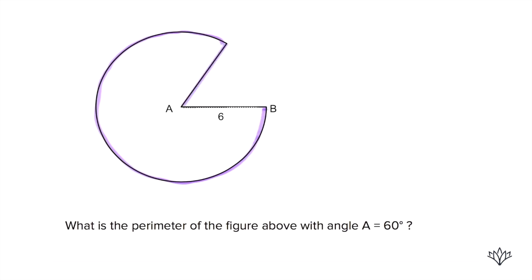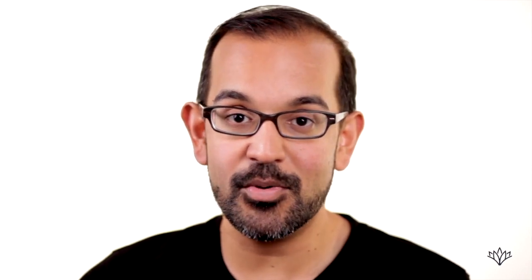Now that's the part that students often forget. What they do is they just figure out part of the circle and then leave the rest undone. But you have to include those two radii — that's really important. So now, what is the perimeter of the figure with angle A equals 60?